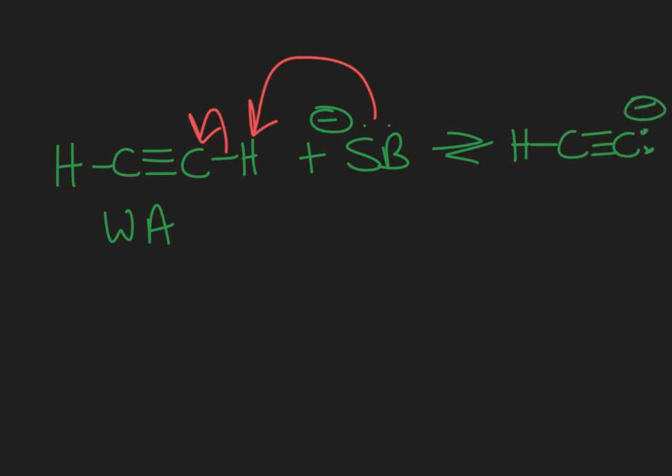So there's a lone pair on there, and then I would have the conjugate acid of my strong base over there. But the reason for this increased acidity really has to do with the stability of the product that you're making relative to if it had been an alkene or an alkane.